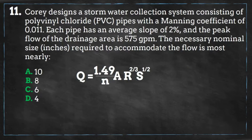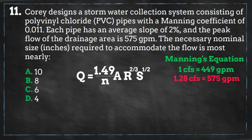For SI units, the equation will have a coefficient of 1 instead of 1.49. Our flow rate is 575 gallons per minute. The unit conversion is: one cubic foot per second equals 449 gallons per minute, so we can calculate our flow to equal 1.28 cubic feet per second.